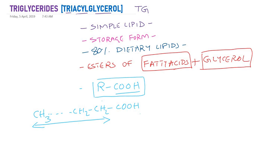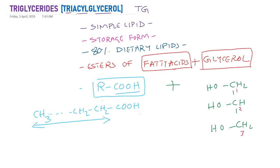Triglycerides are made up of fatty acids and glycerol. Glycerol is an alcohol. Its structure is CH2OH on carbon number one, CHOH on carbon number two, and CH2OH on carbon number three — also called alpha, beta, and alpha-dash. This is the structure of glycerol.